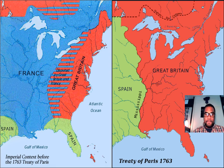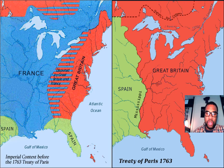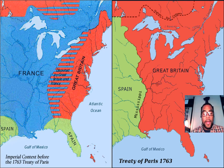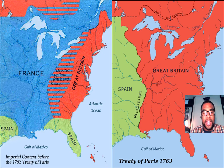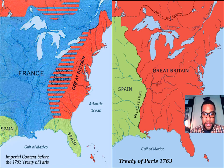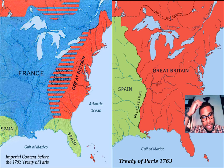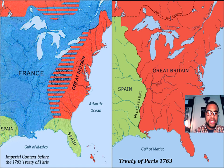Here you can see the before and after picture of what the territory of America looked like during that time. As you can see, France had a much bigger stake in America. But after the French and Indian War, Spain took over a great deal, and Great Britain moved a little bit further west. In this picture, you can see on the left that the colonies pretty much stopped at Georgia.